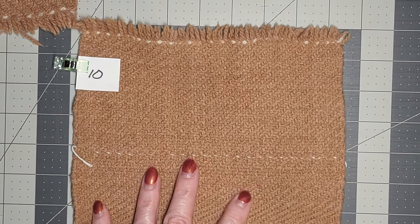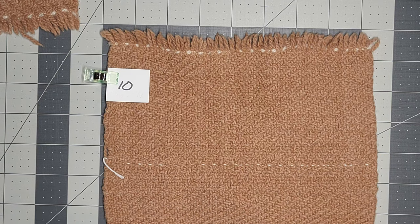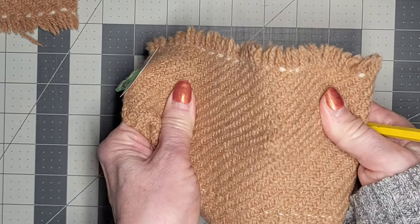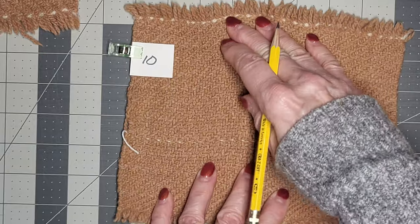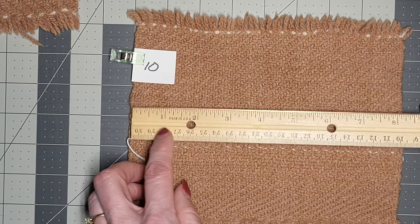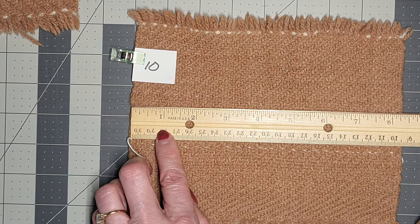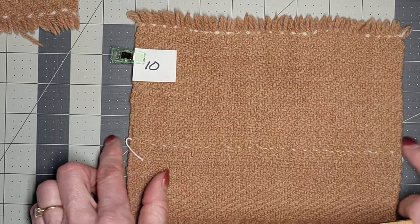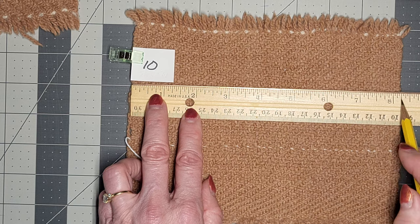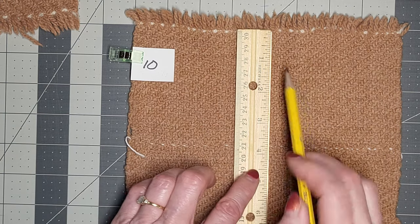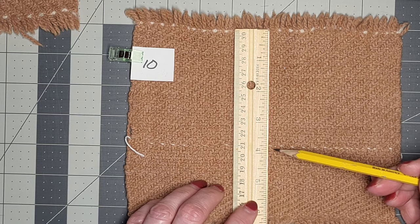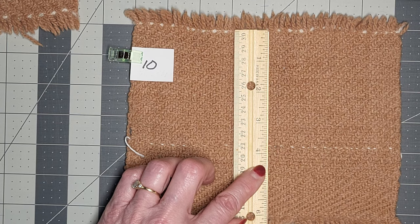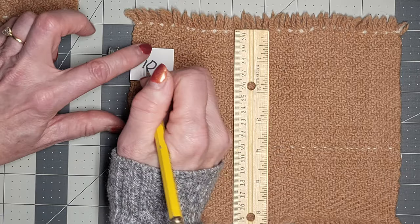This is our 10 ends per inch and 10 picks per inch. This one I did not really need to felt. I couldn't get my finger through the cloth when it was wet so that's fine. This one is, let's see, it looks like about eight and a quarter. It kind of flares out right here so we'll take an average, looks like an eight and a quarter.